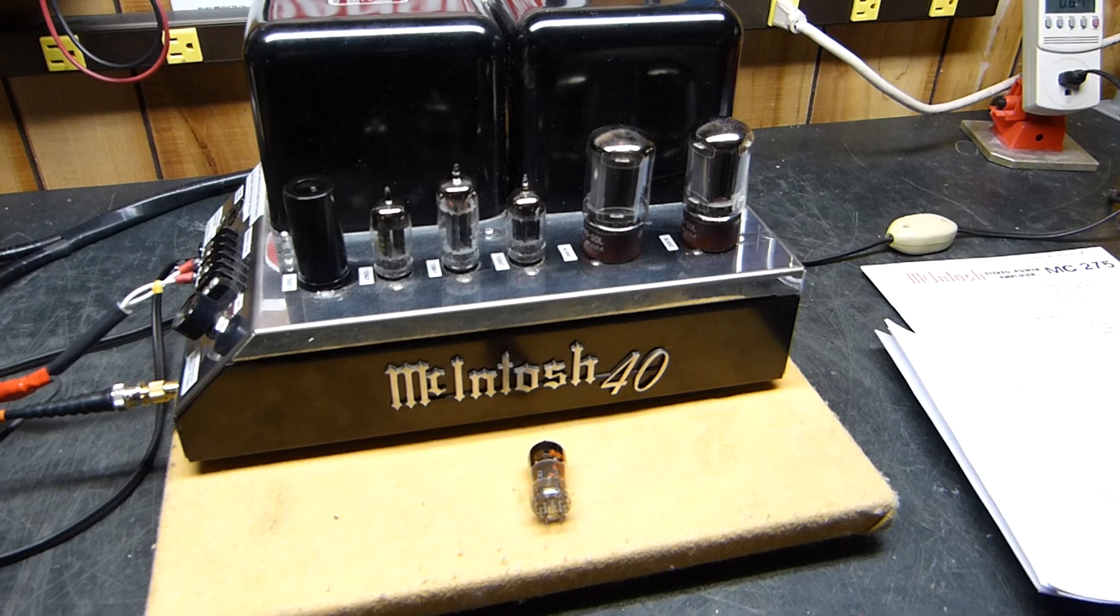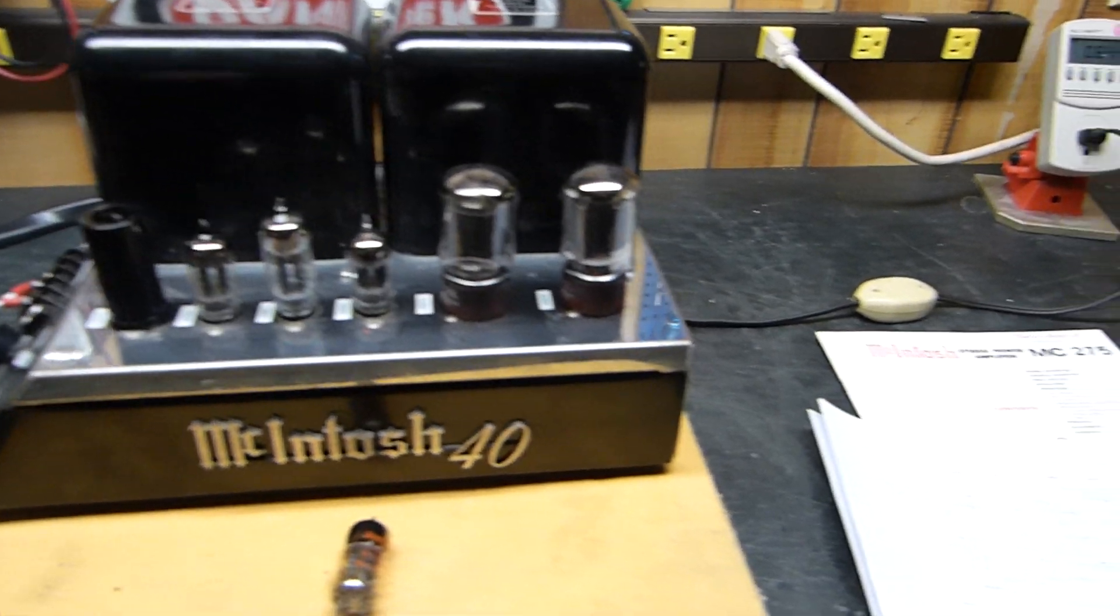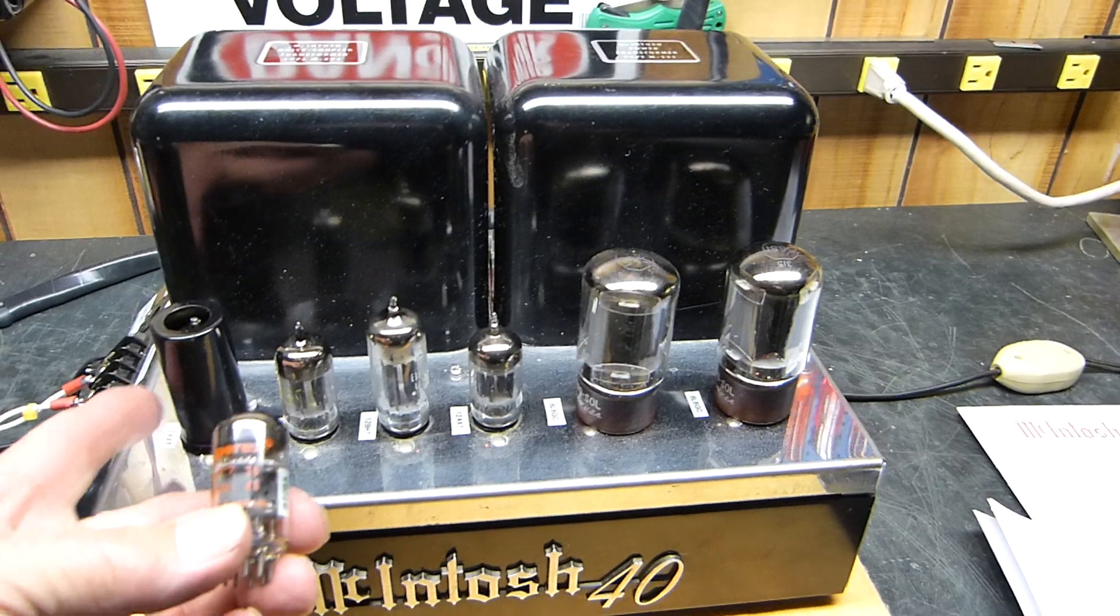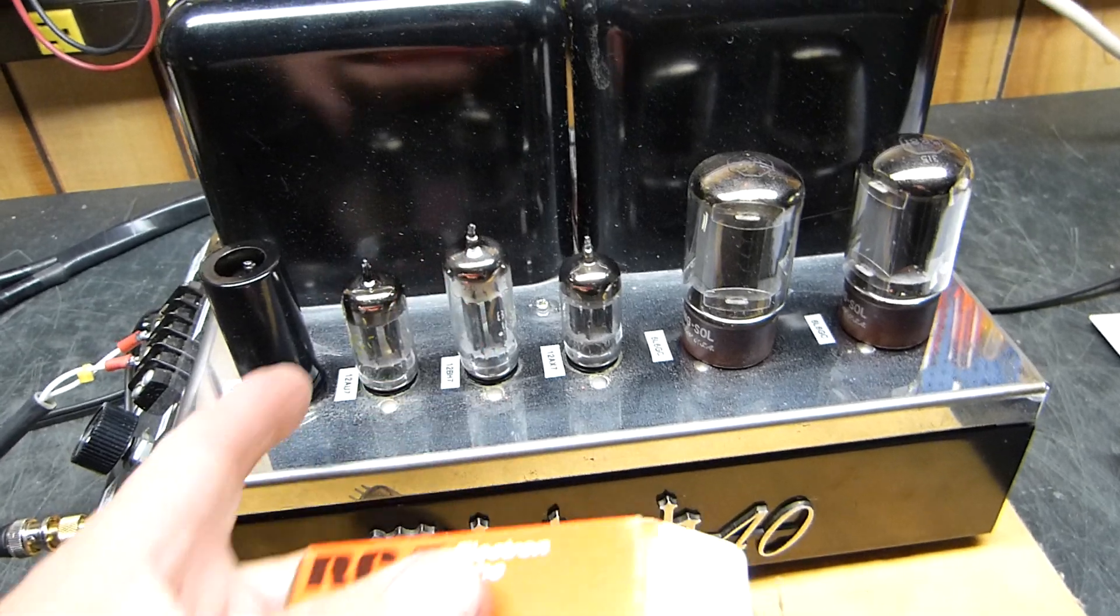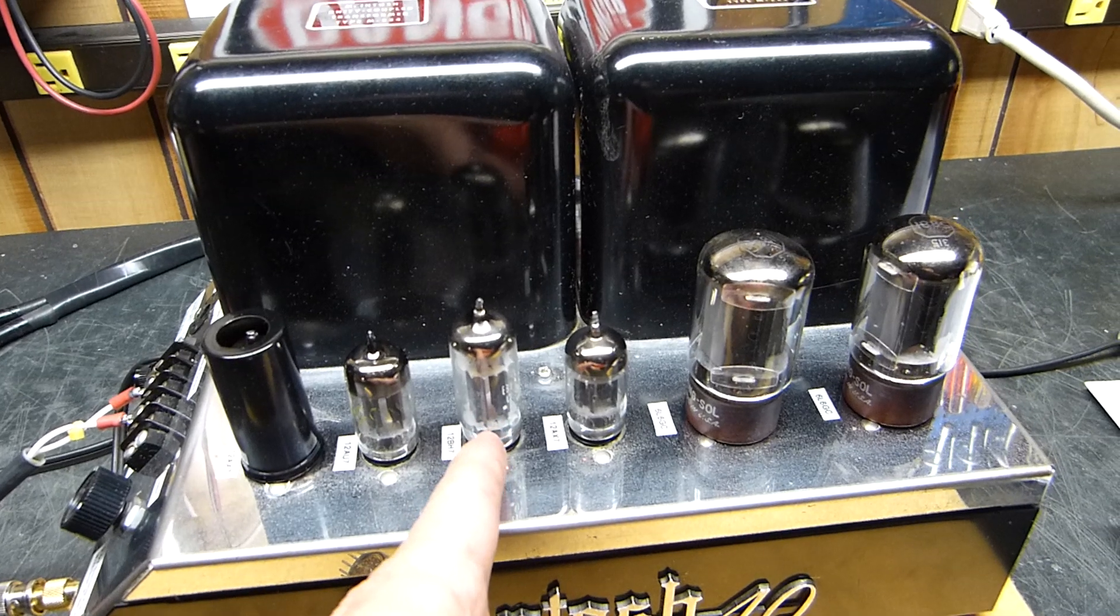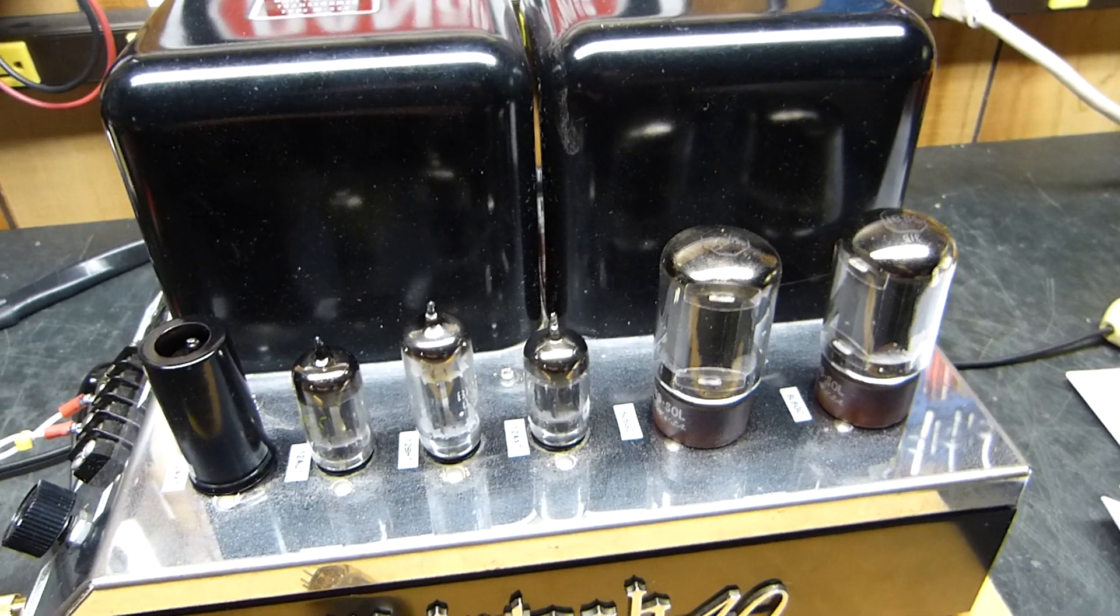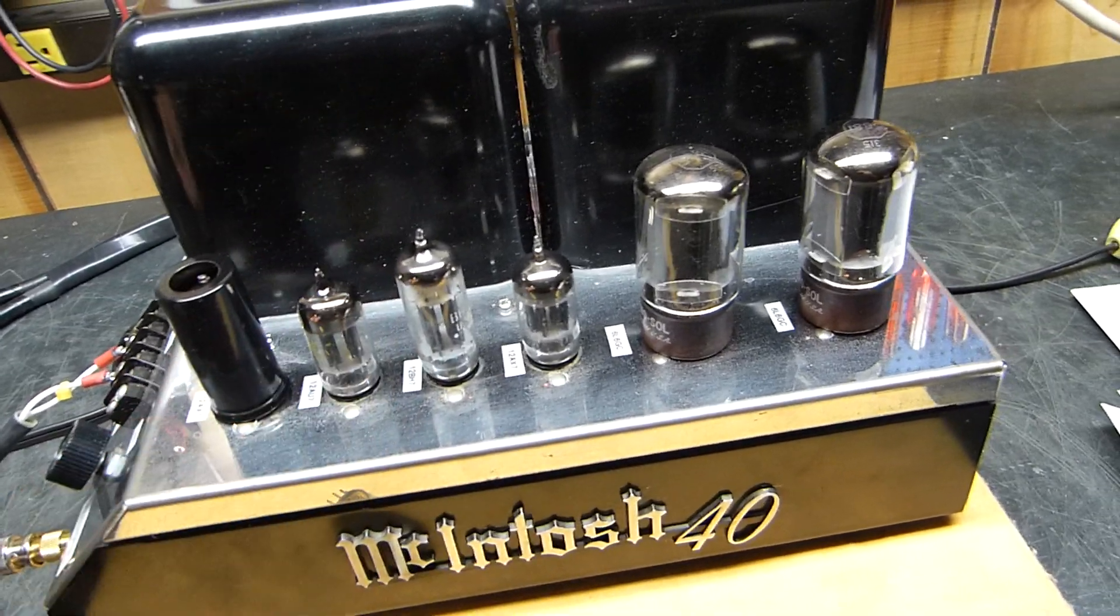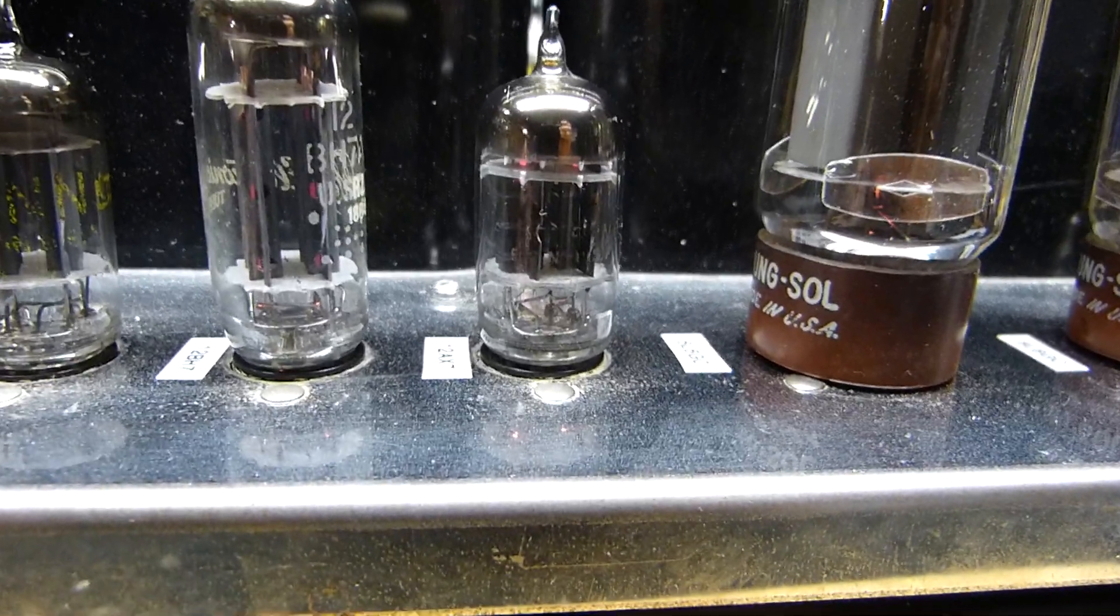Okay, I promise this is the last one. At the risk of beating a dead horse, I've changed all of these tubes. This one is a 5751, this is something out of a console organ - the 12AU7. The 12BH7 is a GE instead of the RCA.